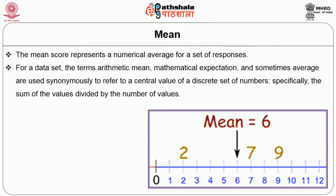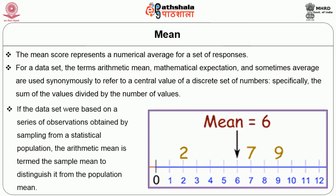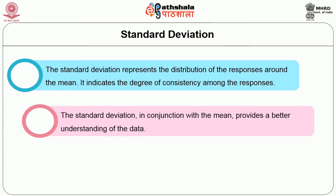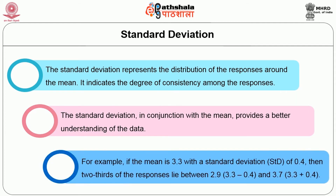Specifically, the sum of the values divided by the number of values. If the data set were based on a series of observations obtained by sampling from a statistical population, the arithmetic mean is termed the sample mean to distinguish it from the population mean. Standard deviation: The standard deviation represents the distribution of the responses around the mean. It indicates the degree of consistency among the responses. The standard deviation in conjunction with the mean provides a better understanding of the data. For example, if the mean is 3.3 with a standard deviation of 0.4, then two-thirds of the responses lie between 2.9 and 3.7.